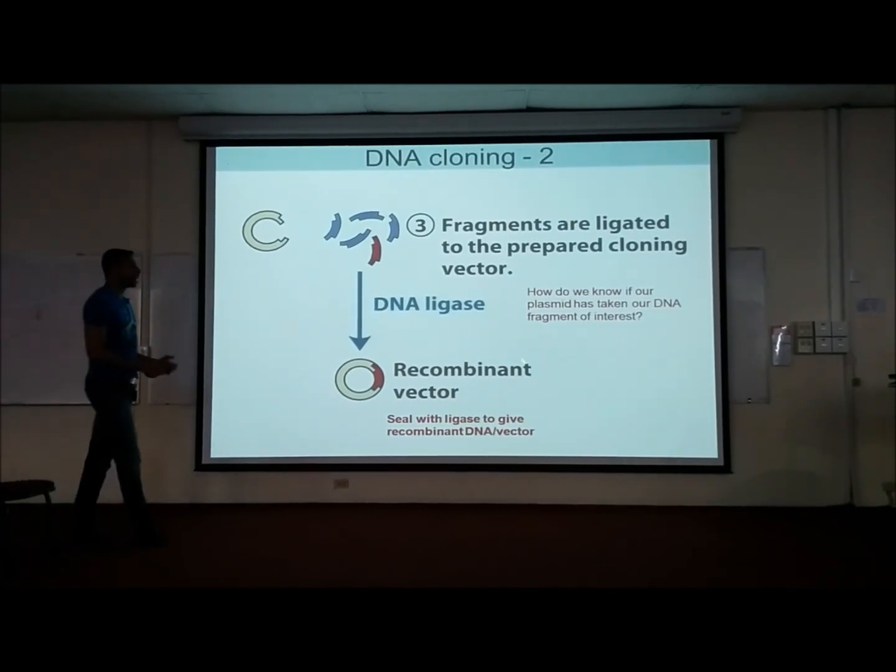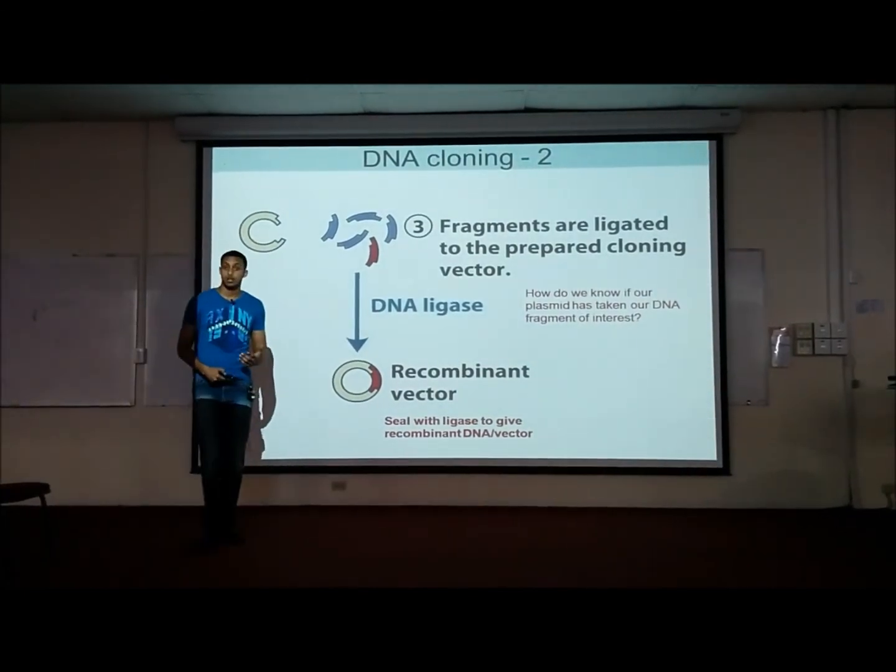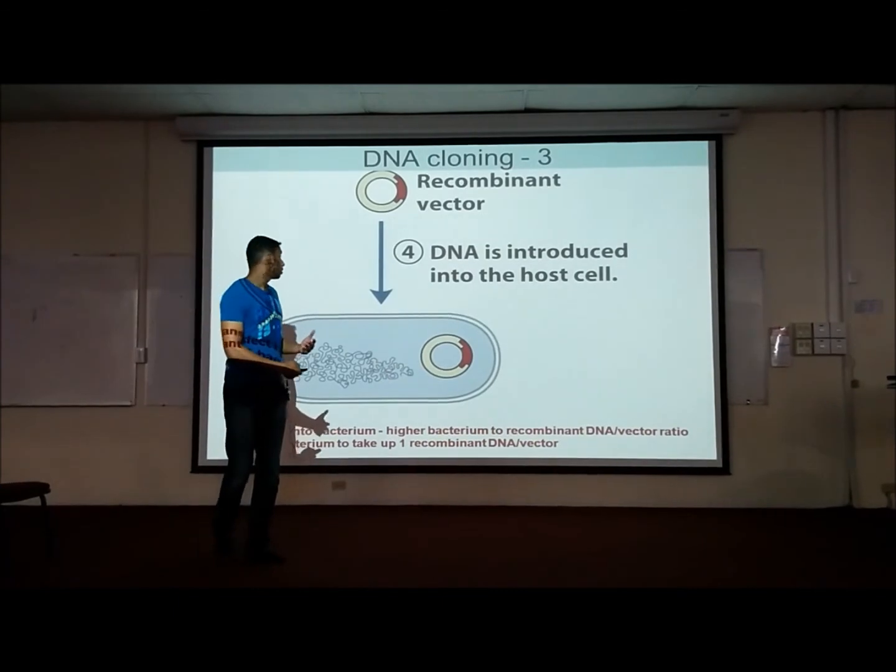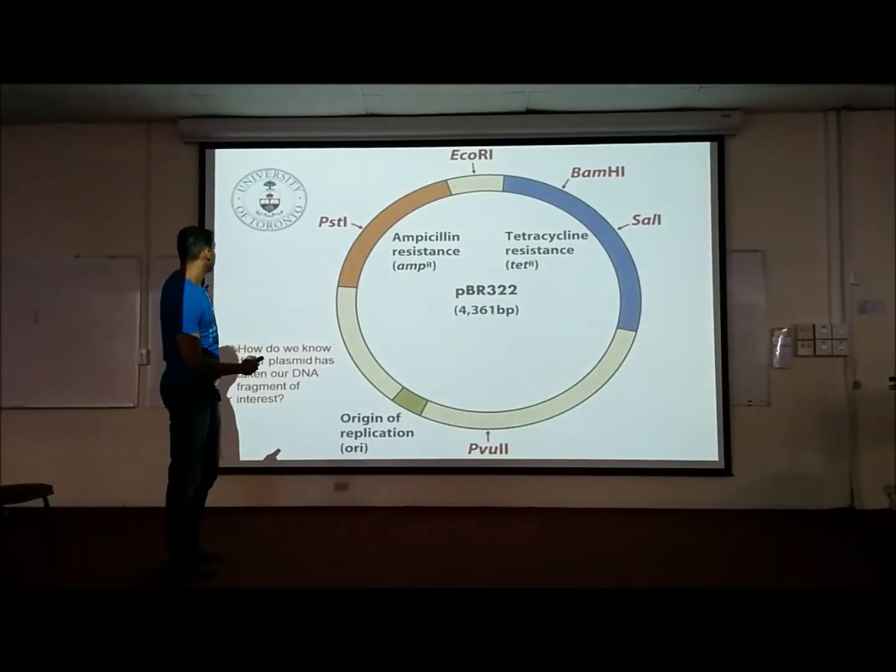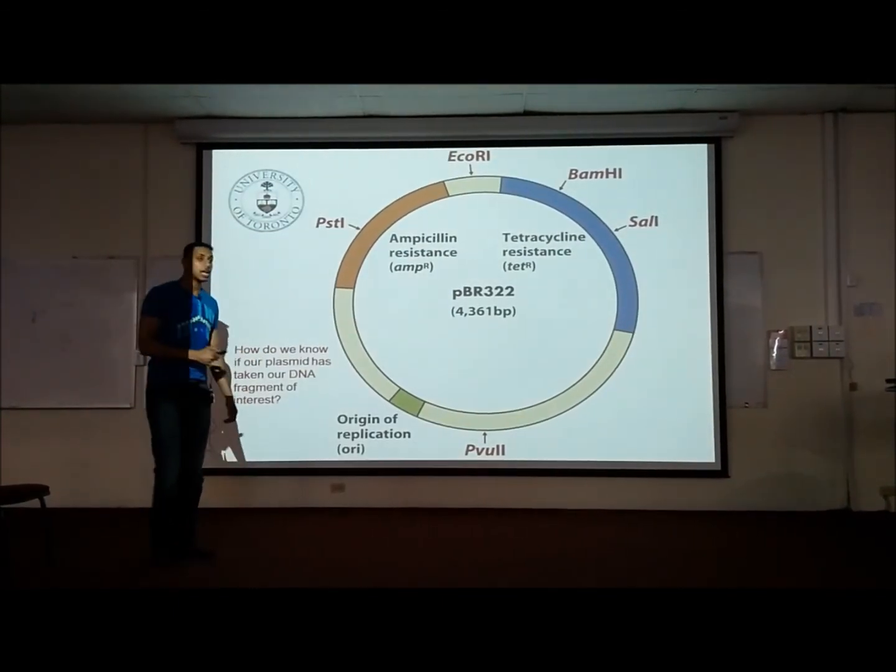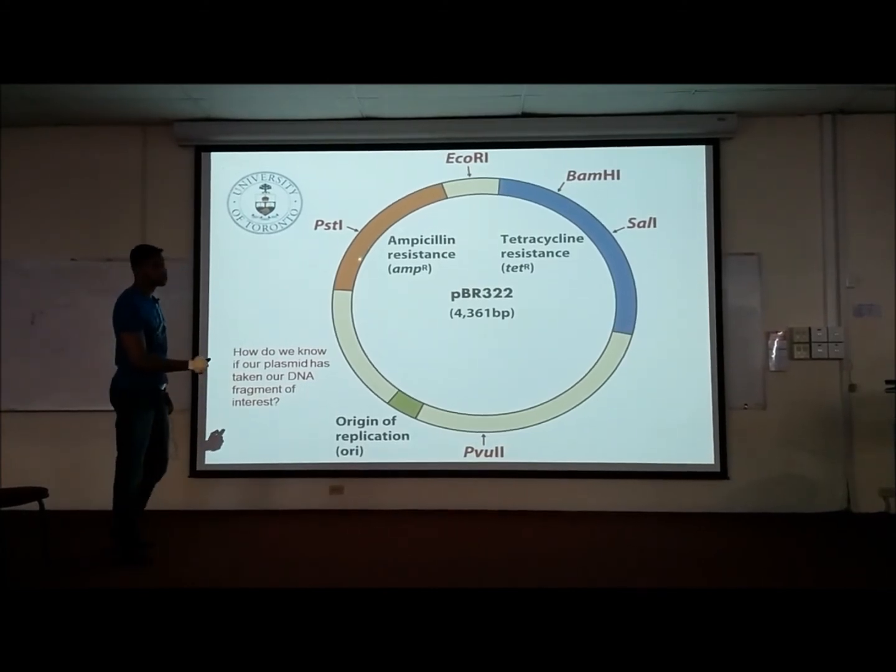How do we know our plasmid has taken our DNA of interest? We choose an endonuclease that's going to cleave this ampicillin resistance.